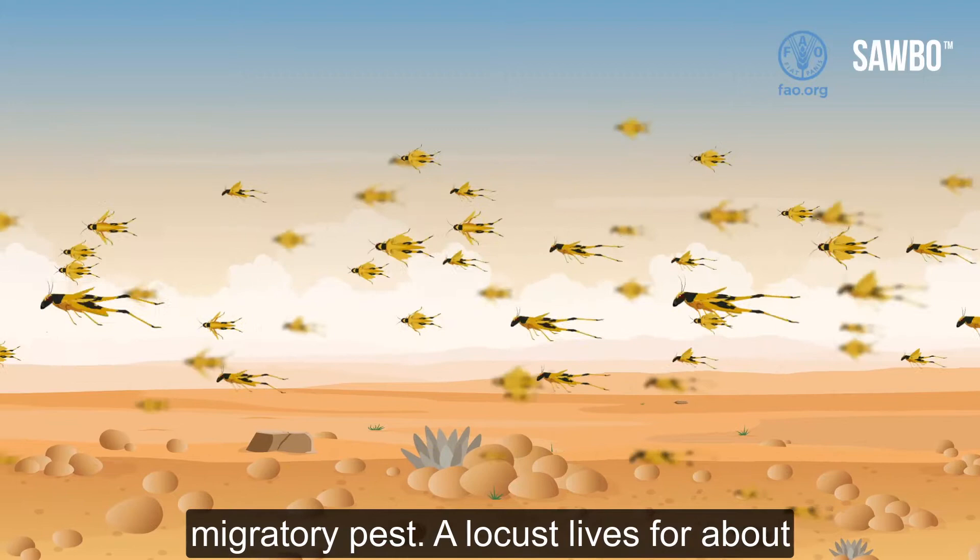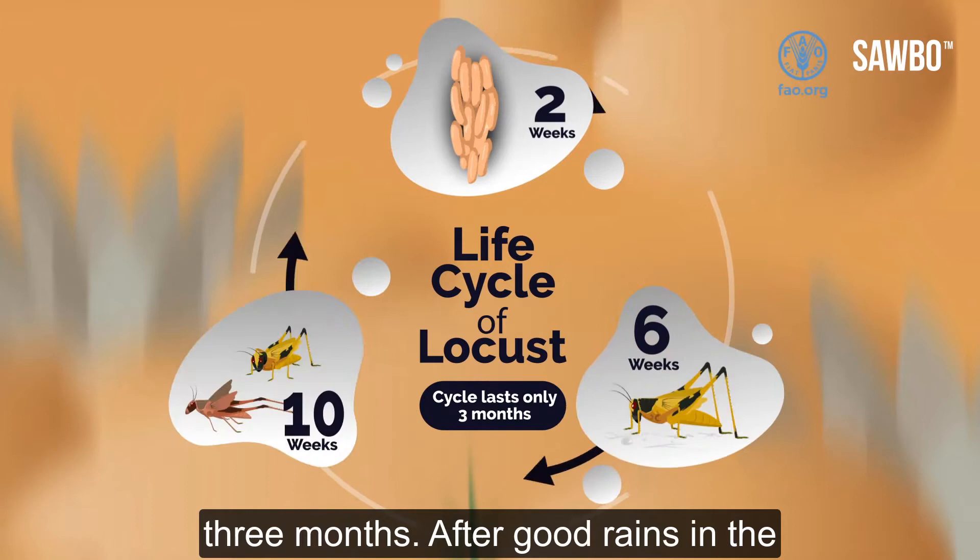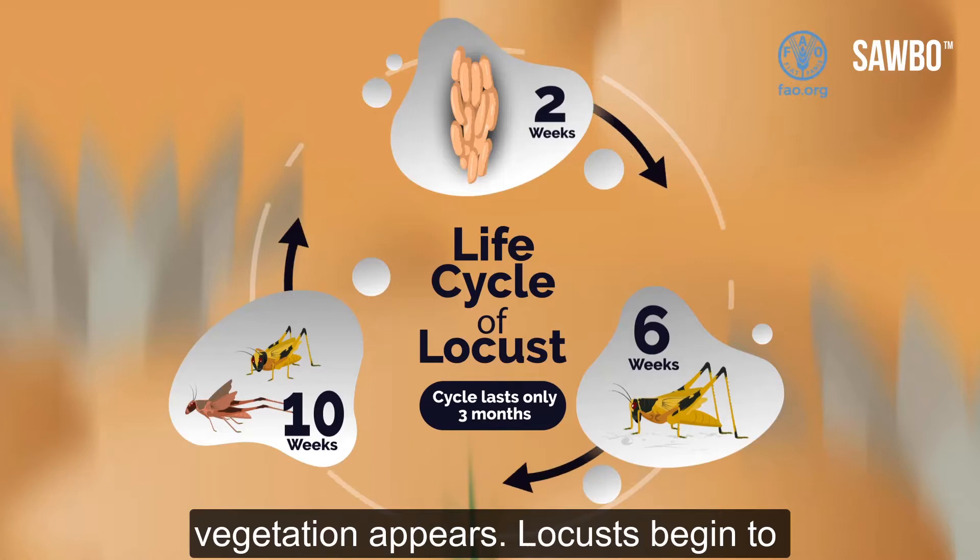A locust lives for about three months. After good rains in the desert, the sand becomes wet and green vegetation appears.